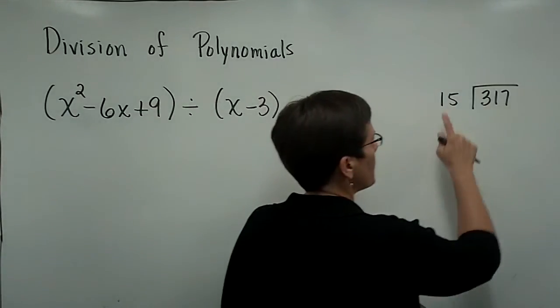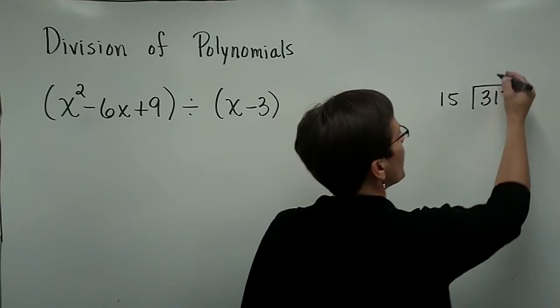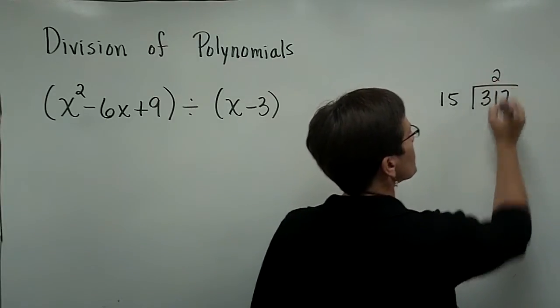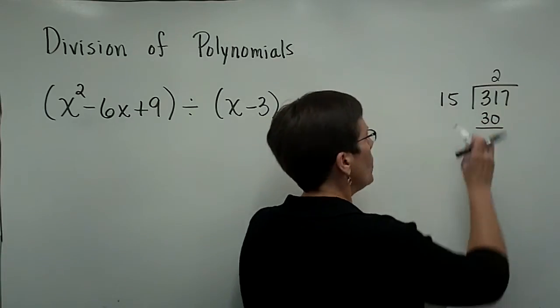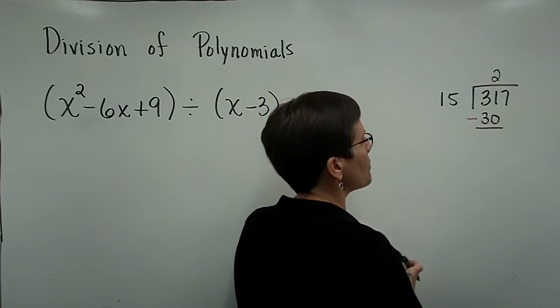We said, when we did this problem, that 15 divides into 31 twice, and we put that 2 over top of that 1, and 15 times 2 was 30.